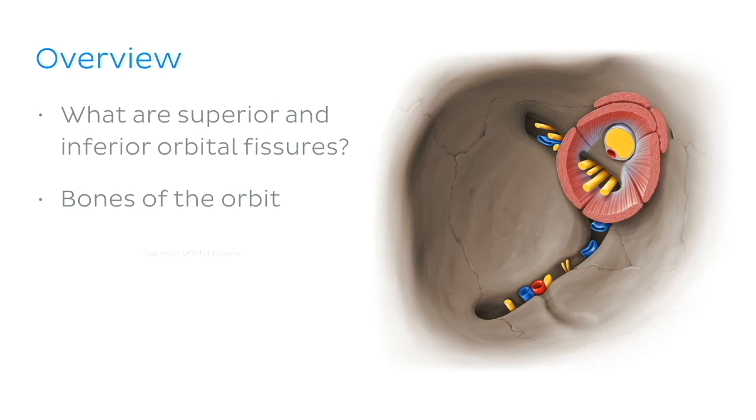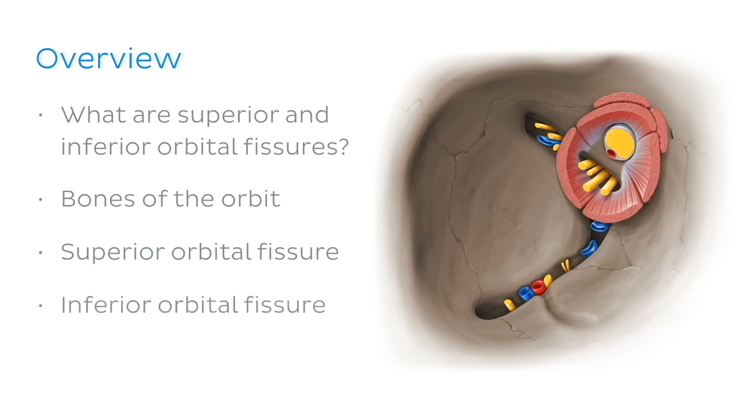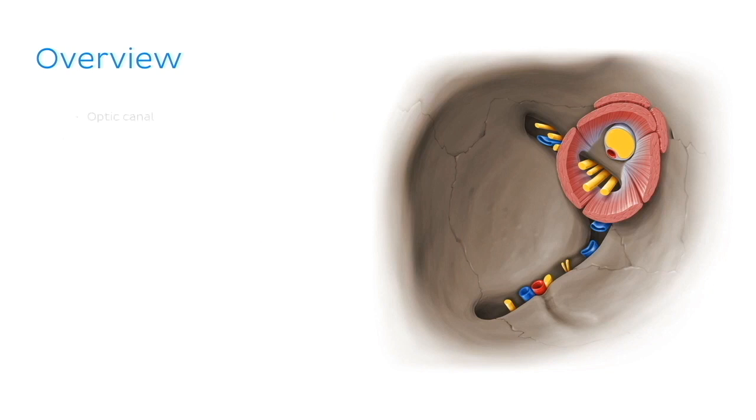Next, we'll look at the superior orbital fissure and the structures that pass through it, followed by the inferior orbital fissure and its structures. Then we'll move on to the contents of the optic canal. And lastly, we'll conclude our tutorial with some clinical notes.